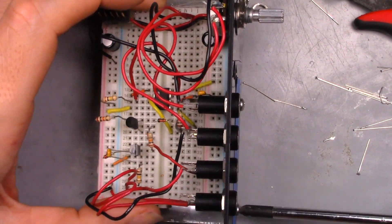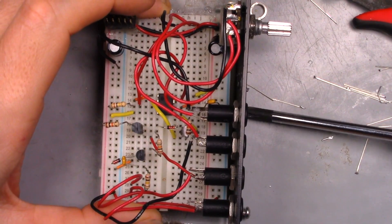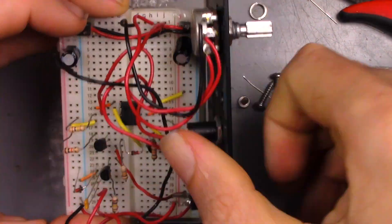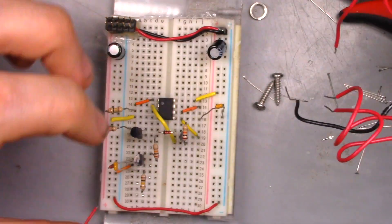To begin, take the breadboard module made in the last video and separate the breadboard from the faceplate for easier access. Now, with that out of the way, the dual op-amp chip needs to be swapped with a quad op-amp chip.